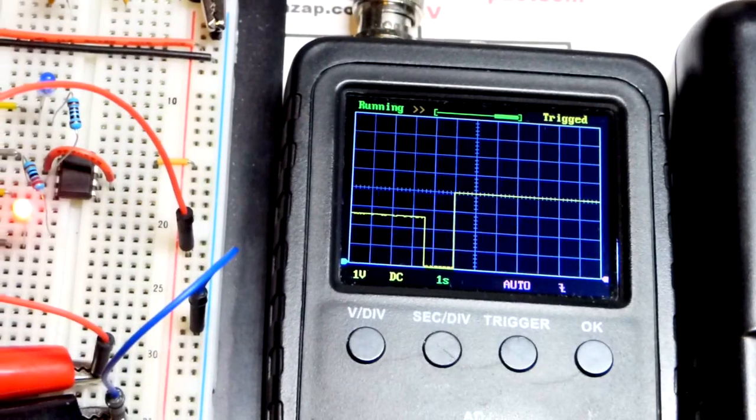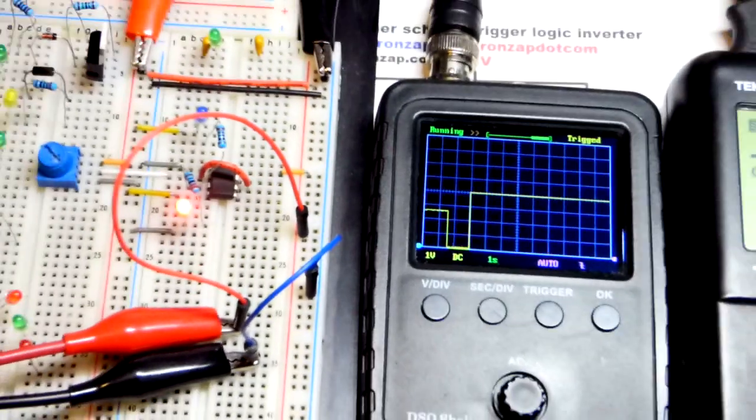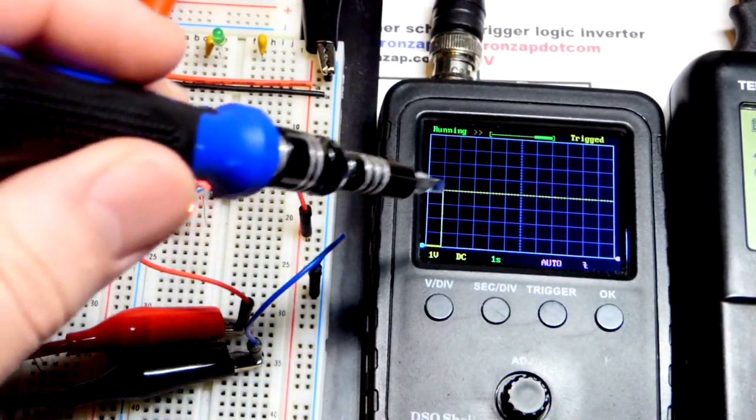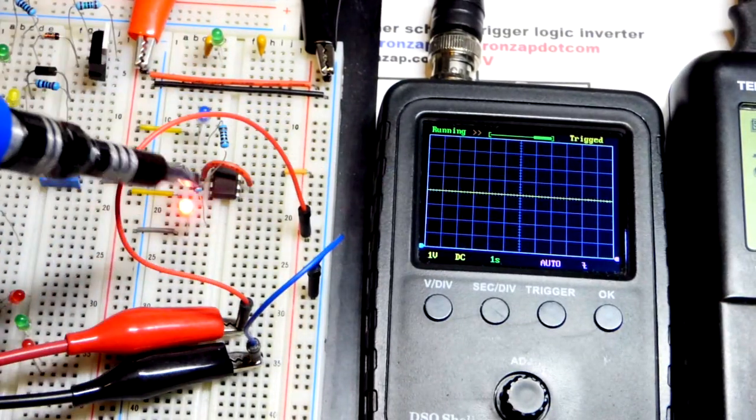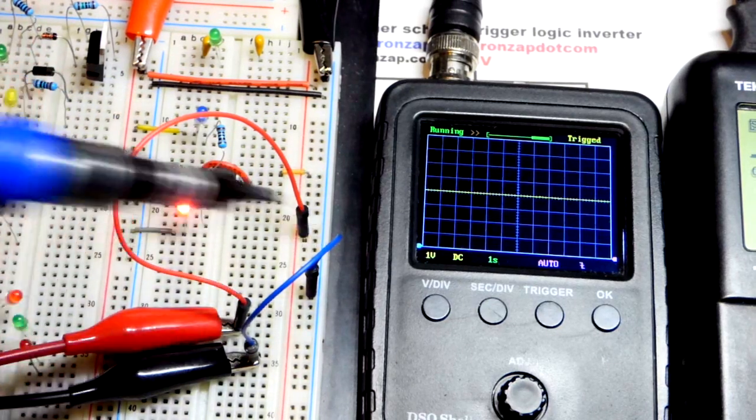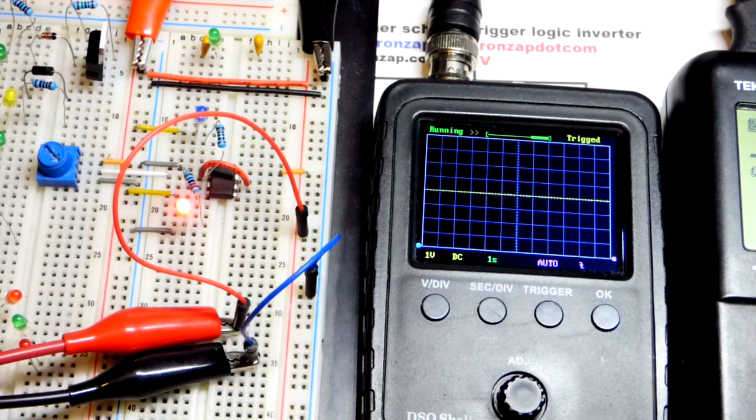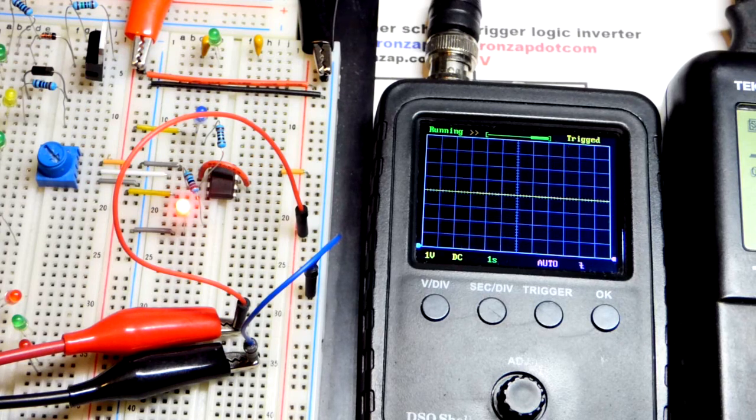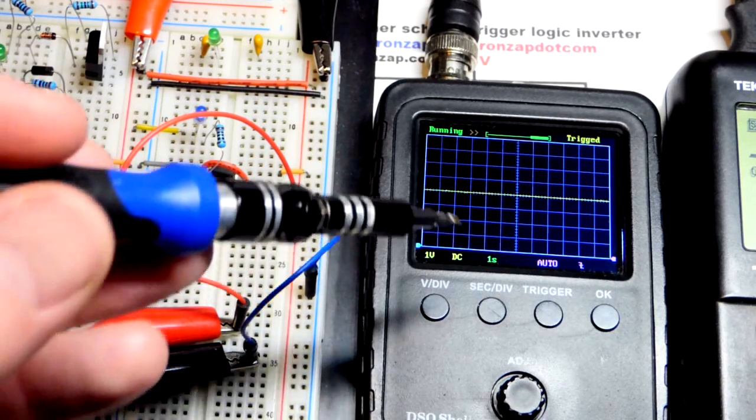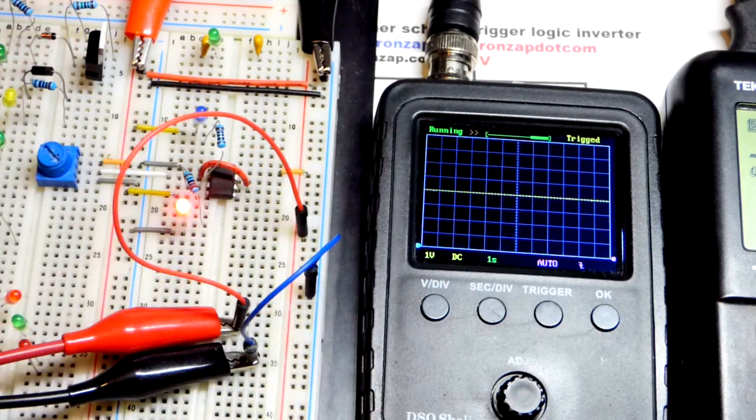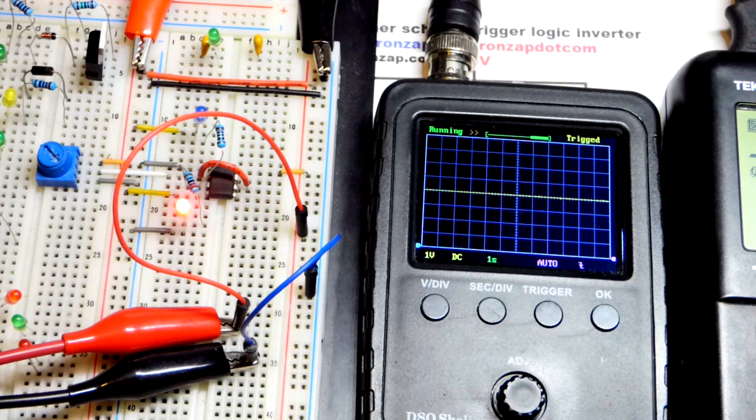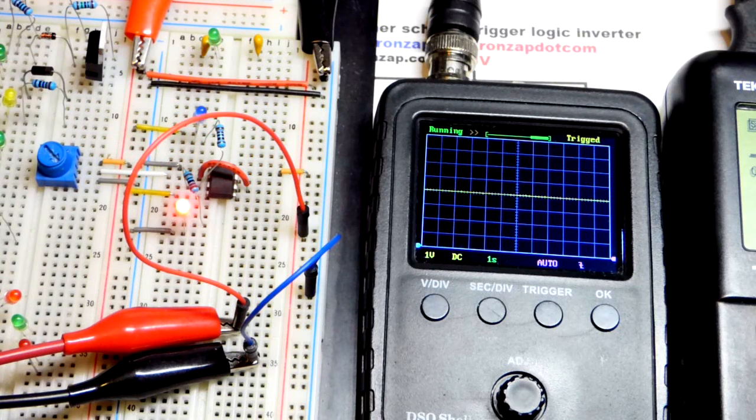But generally, the vast majority of 555 timers that are used cannot get to the supply voltage for the high output, but they do get to ground. So make sure you check the datasheet for the particular part number you're using. But this is by far the most common. I had to special order the ones that I have, the LMC, that go from rail to rail, but again they provide less current so there's drawbacks to having that.